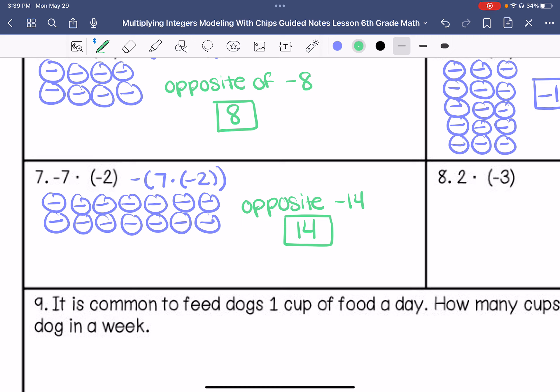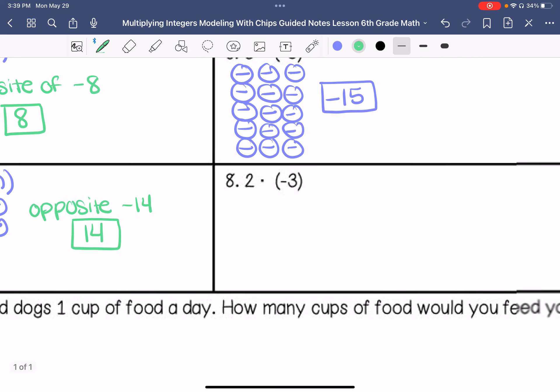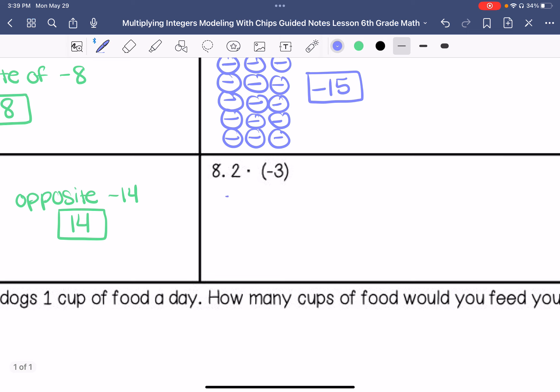Number 8, I have 2 groups of negative 3. 2 times negative 3. That ends up being negative 6.